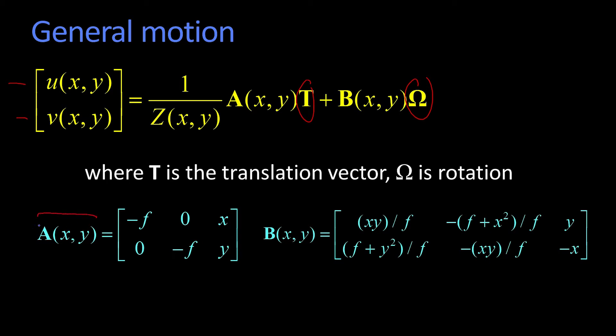Thing to realize is that this quantity A is just a function of things we know. We're assuming we know the focal length of the lens, and if we're at some point xy, we know what that point is—this is little x, little y. This is the location in the image. Cap X, cap Y, cap Z out in the world; little x, little y in the image.